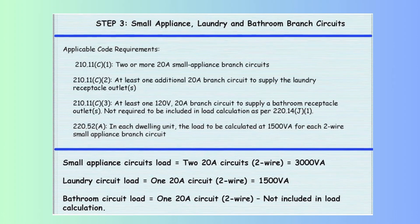Step 3 focuses on branch circuits required for small appliances, laundry areas, and bathrooms as specified in the 2023 NEC. Per NEC 210.11(C)(1), a minimum of two 20-ampere branch circuits are mandated to supply receptacle outlets in kitchens, pantries, dining rooms, and similar areas, each calculated at 1,500 VA, totaling 3,000 VA for two circuits. Per NEC 210.11(C)(2), at least one additional 20-ampere branch circuit must supply laundry receptacle outlets, calculated at 1,500 VA. Per NEC 210.11(C)(3), at least one 20-ampere branch circuit must supply bathroom receptacle outlets; however, per NEC 220.14(J), this load is typically included in the general lighting load calculation.